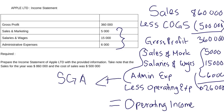Your operating income is your gross profit of three hundred and sixty thousand minus your twenty-six thousand, and that is three hundred and thirty-four thousand. I hope this helps — it's very simple and very easy. Don't forget to subscribe and watch the previous video so you understand how to calculate your cost of goods sold, which is super important.